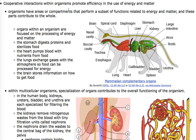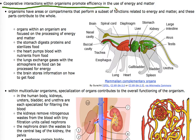We need to talk about moving up in levels of organization — organs, organ systems, and organisms. Cooperative interactions within organisms promote efficiency in the use of energy and matter, meaning you have whole areas or compartments of your body that perform subsets of functions related to energy and matter.